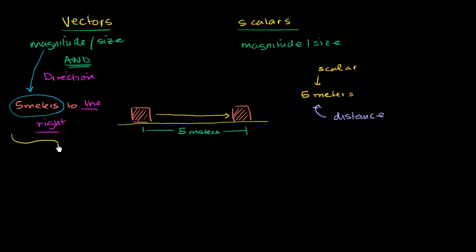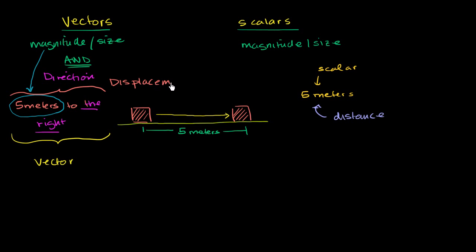This is a vector. When you talk about the movement — the change in position — and you give its direction, the vector version of distance is displacement. So the correct thing to say is that this brick has been displaced five meters to the right, or it has been moved a distance of five meters. Distance is a scalar quantity; displacement is a vector quantity.